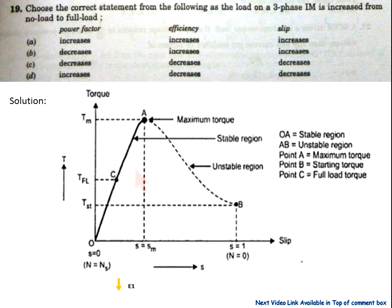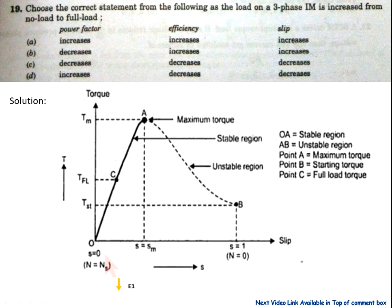At no load, the rotor speed is approximately equal to synchronous speed Ns, so the no-load slip is around zero. When the motor is loaded at full load, the operating point changes and the slip increases from 0 to approximately 0.04 to 0.05.